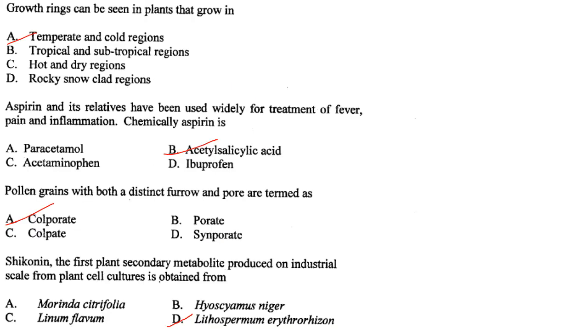Growth rings can be seen in plants that grow in temperate and cold regions. Answer is option A.